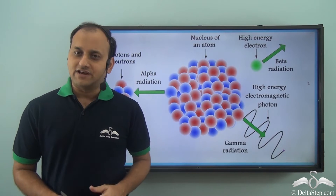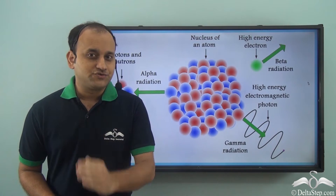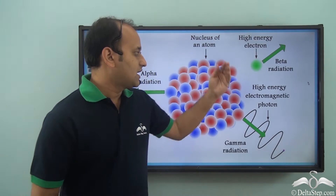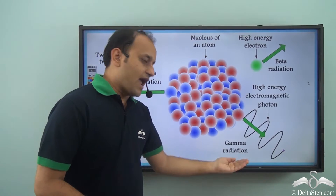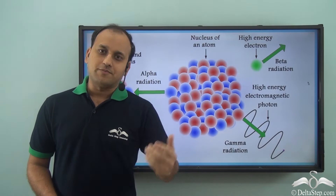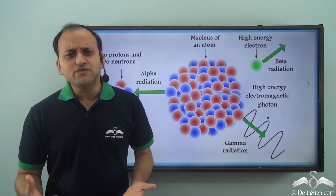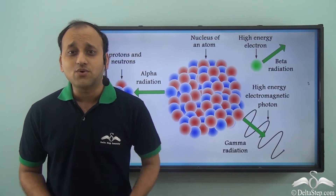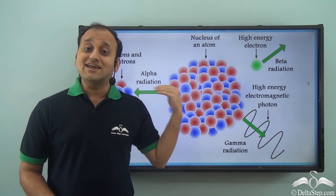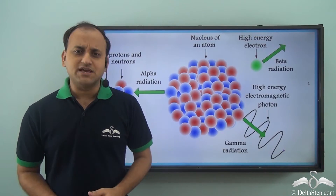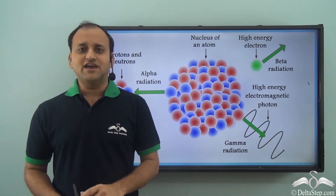We know that radioactive radiations are of three types: alpha radiation, beta radiation, and gamma radiation. All three radiations have their own properties, but why do we need to study them in detail? The reason is that radioactive radiation is used in many different fields by human beings. Let's understand the different applications of radioactive radiation.